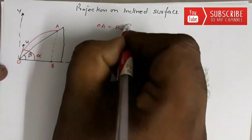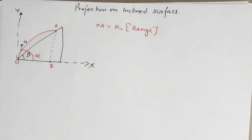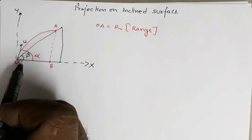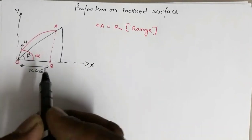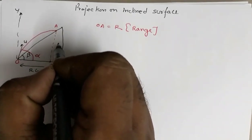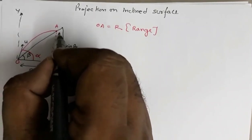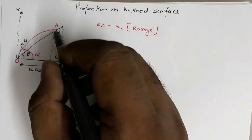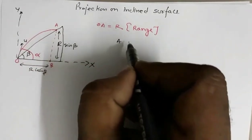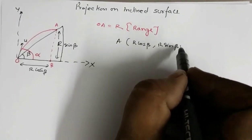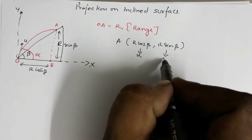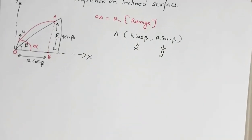The point of projection is O, so OA is the range along the inclined surface. Suppose OA equals r — this is what we need to find. Since OA is r and the inclination is beta, the horizontal component is r·cos(beta) and the vertical component AB is r·sin(beta). Therefore, the coordinates of point A are (r·cos(beta), r·sin(beta)).